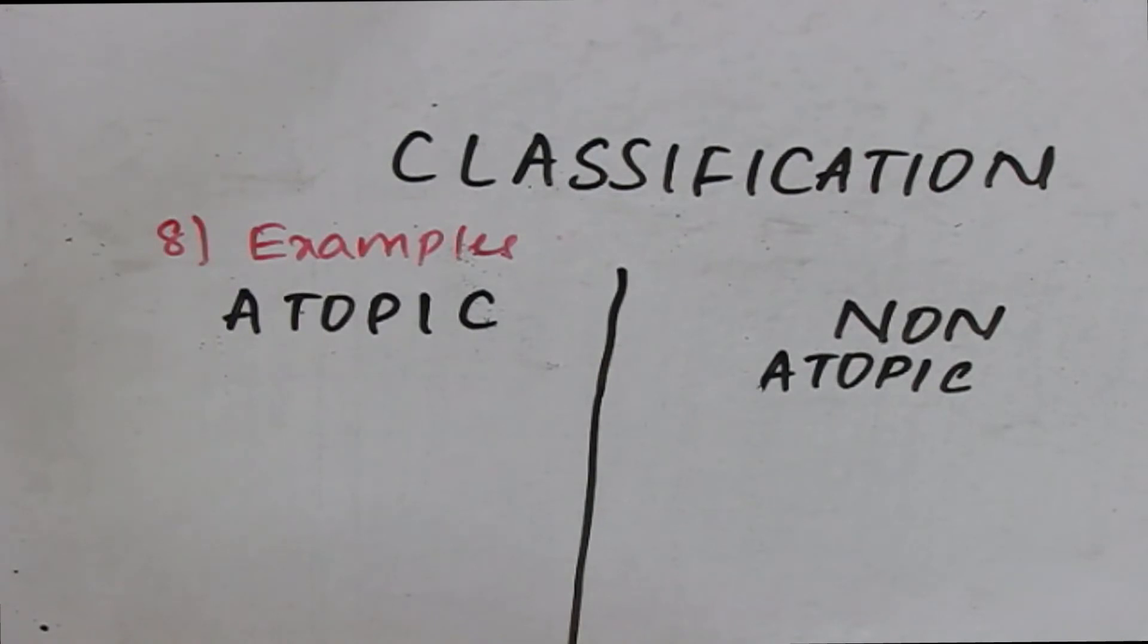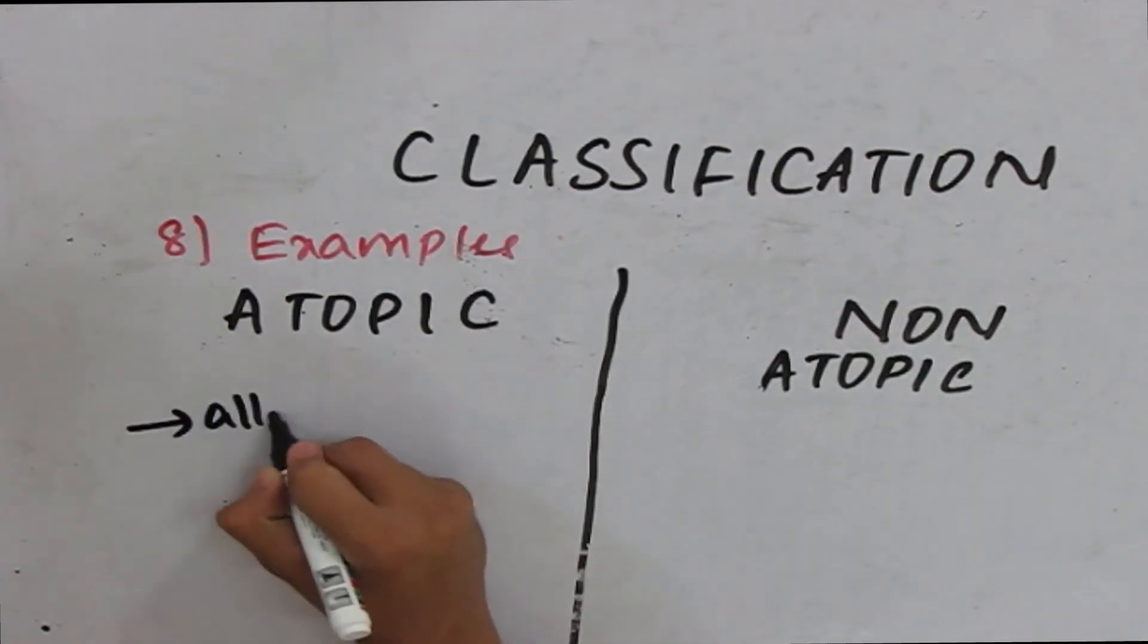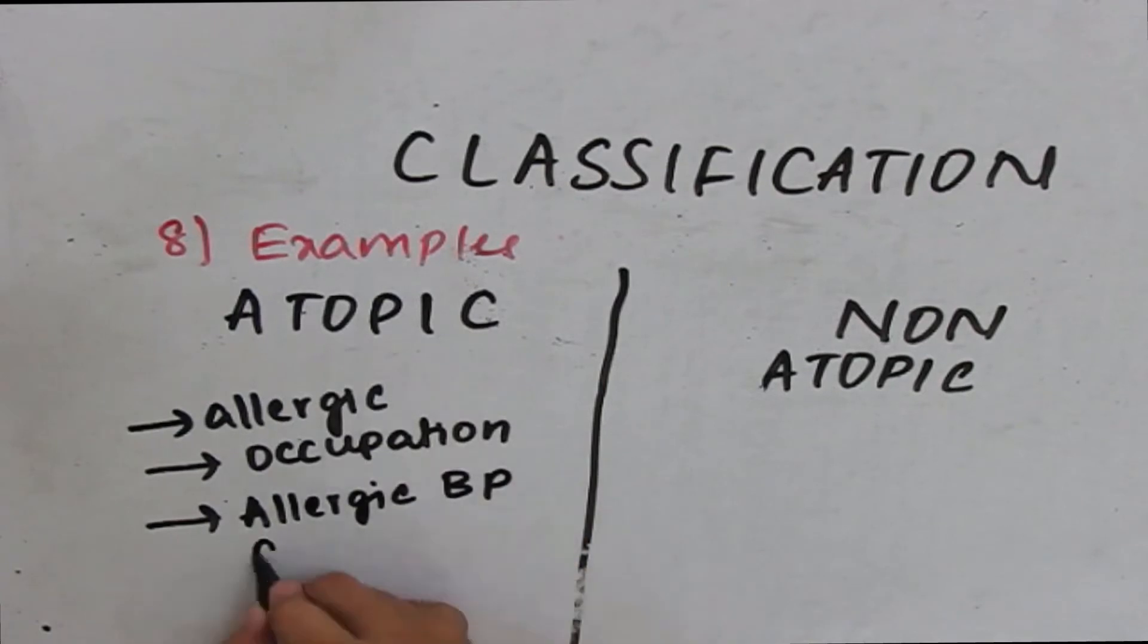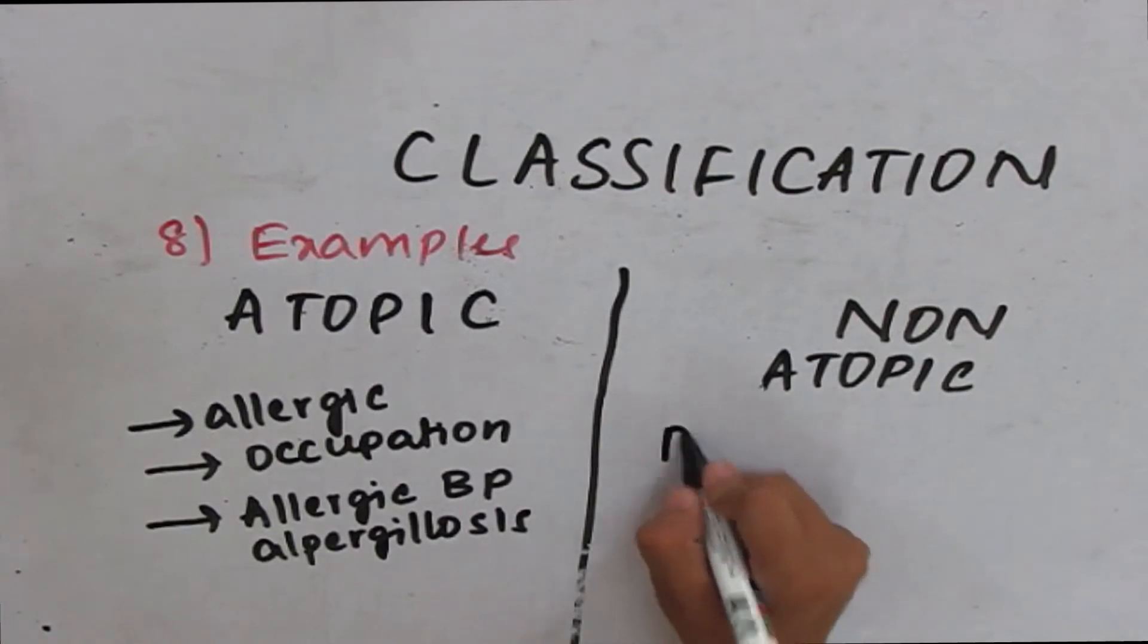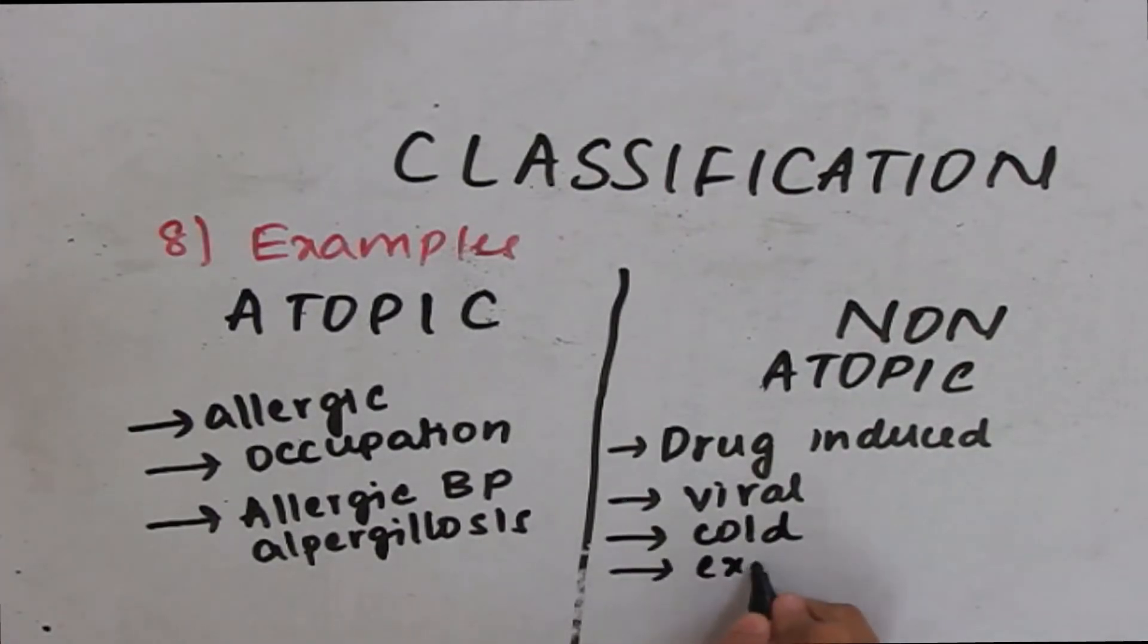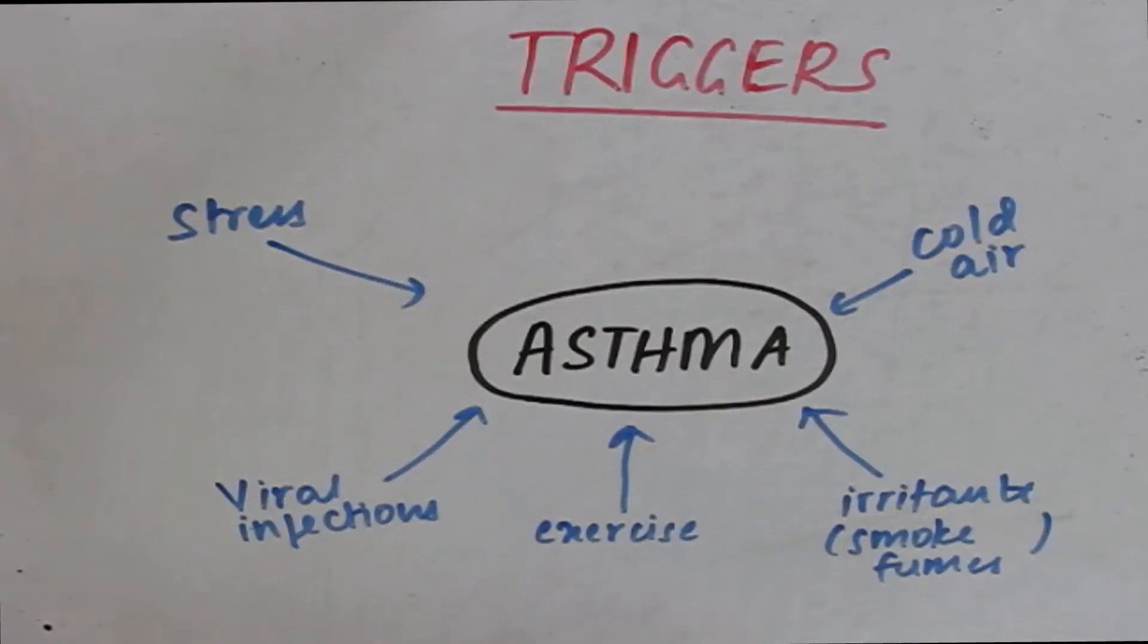Atopic type of bronchial asthma is seen in allergic asthma, occupational asthma, and allergic bronchopulmonary aspergillosis. Whereas, non-atopic type is seen in drug-induced asthma, asthma in viral infections, asthma due to cold, and exercise-induced asthma. So, after I told you about the classification of asthma,